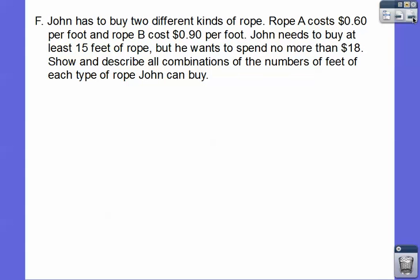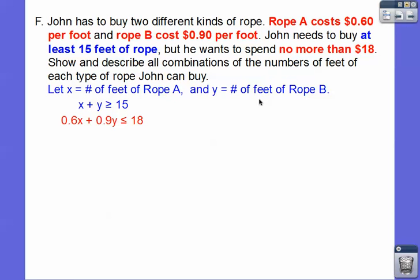John has to buy two different kinds of rope. Rope A costs 60 cents per foot, and rope B is 90 cents a foot. John needs to buy at least 15 feet of rope, but he wants to spend no more than 18 bucks. Show and describe all combinations of numbers of feet of each type of rope John can buy. We're going to let X be rope A, and Y be the feet of rope B. No more than 18 is going to be less than or equal to. He's buying at least 15 feet of rope, so that's greater than or equal to. The feet of A, the feet of B, greater than or equal to 15, and here's the money.